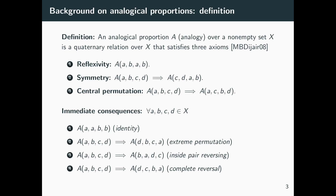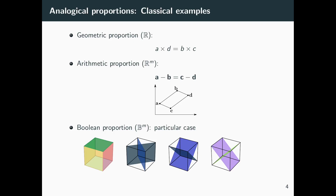From these three axioms, several other properties can be derived. Identity: A, A, B, B should also be an analogical proportion. Permuting the extremes: if A, B, C, D are in analogy, then the resulting tuple with swapped extremes is also an analogy. Reversing the inner pair: if A, B, C, D are in analogy, then B, A, D, C should also be in analogy. And finally, complete reversal: if A, B, C, D are in analogy, then D, C, B, A are also in analogy.